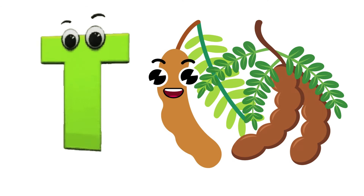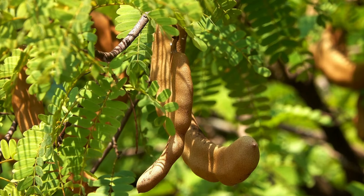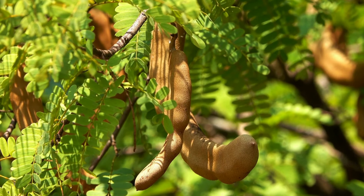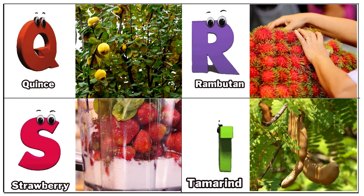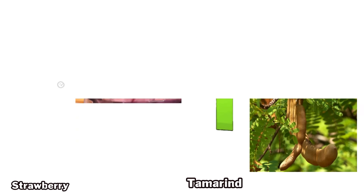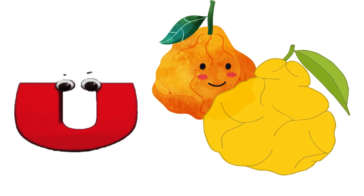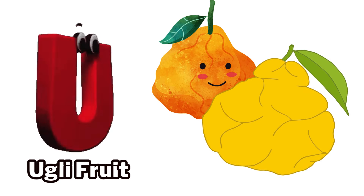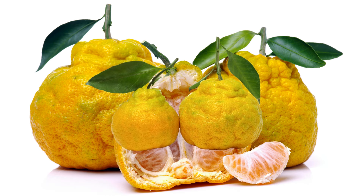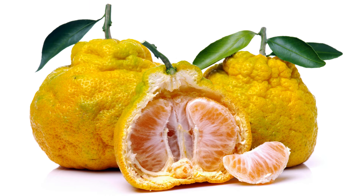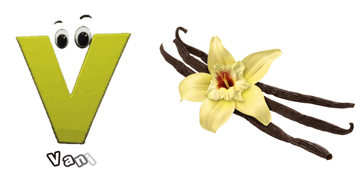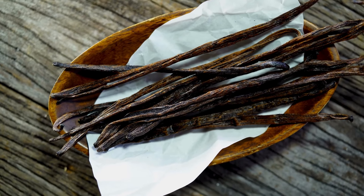T is for tamarind, t-t-tamarind. U is for ugly fruit, u-u-ugly fruit. V is for vanilla bean, v-v-vanilla bean.